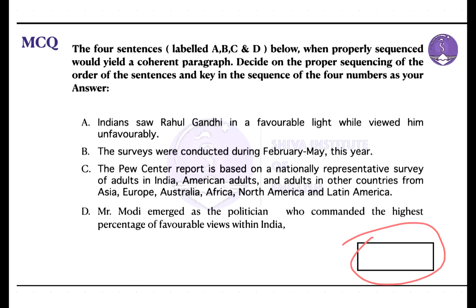Here I have come up with one sample. The directions point out that there are four sentences labeled A, B, C, and D. When properly sequenced, they would produce a coherent paragraph. You have to decide on the proper sequencing of the sentences and key in the sequence of the four numbers as your answer.